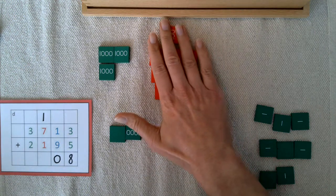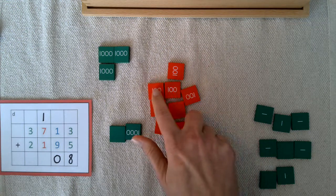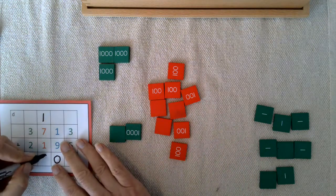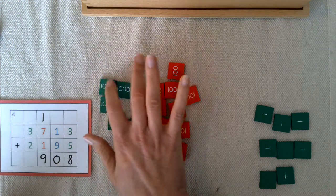Now let's put together all of our hundreds and see what we have: one, two, three, four, five, six, seven, eight, nine hundreds. And let's put together our thousands: one, two, three, four, five.